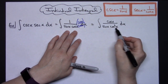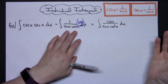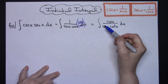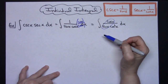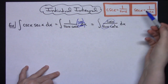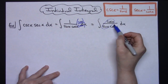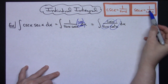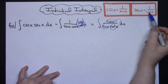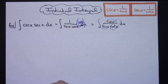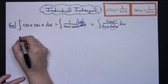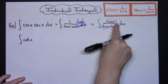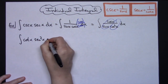Now it's a matter of taking a look at this and seeing if I can do more substitutions with the trig identities. I've got cosine over sine, which gives me cotangent — a common identity. Then with an imaginary 1 there, 1 over cosine squared is secant squared. So I can divide that up and do substitutions to get the integral of cotangent x times secant squared x dx.